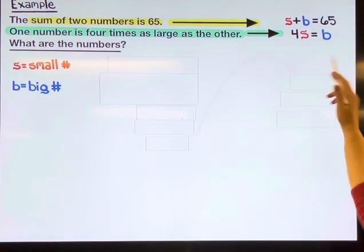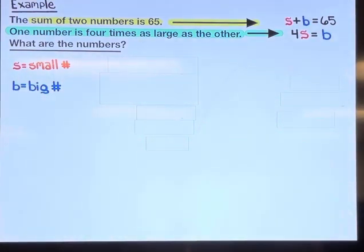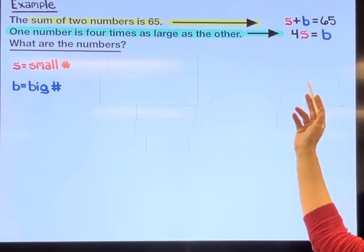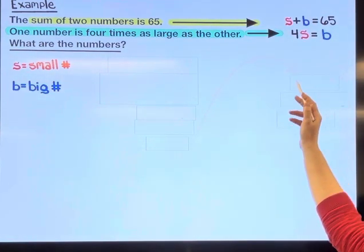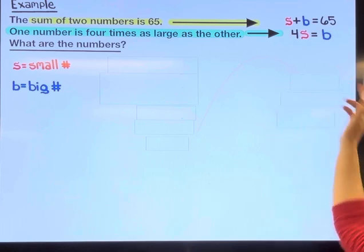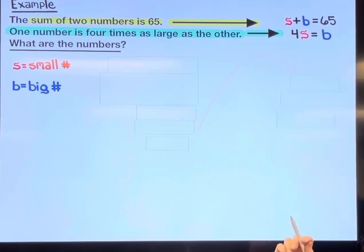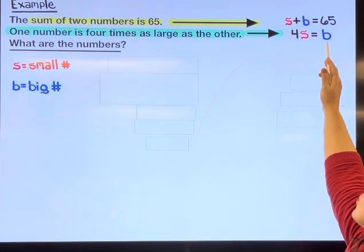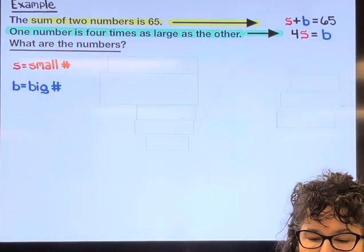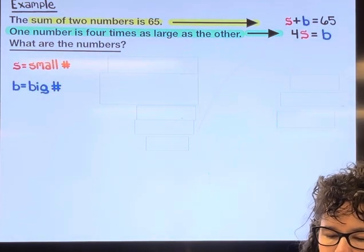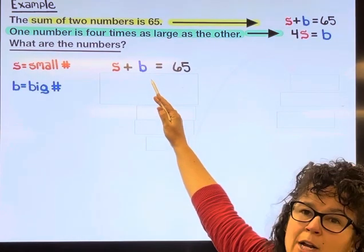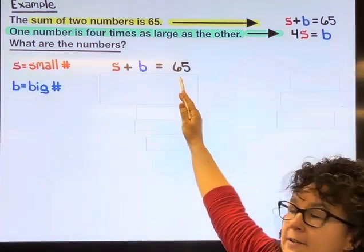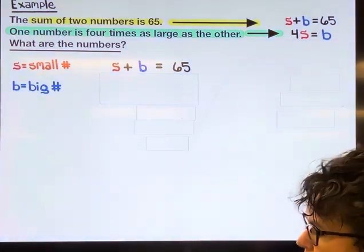In this instance, I think the method we should use is substitution, and the reason I'm selecting that method is because one of the variables is already by itself. So I'm going to start off with the equation I wrote: s plus b equals 65. And now I'm going to be able to replace the b in this equation with 4s.